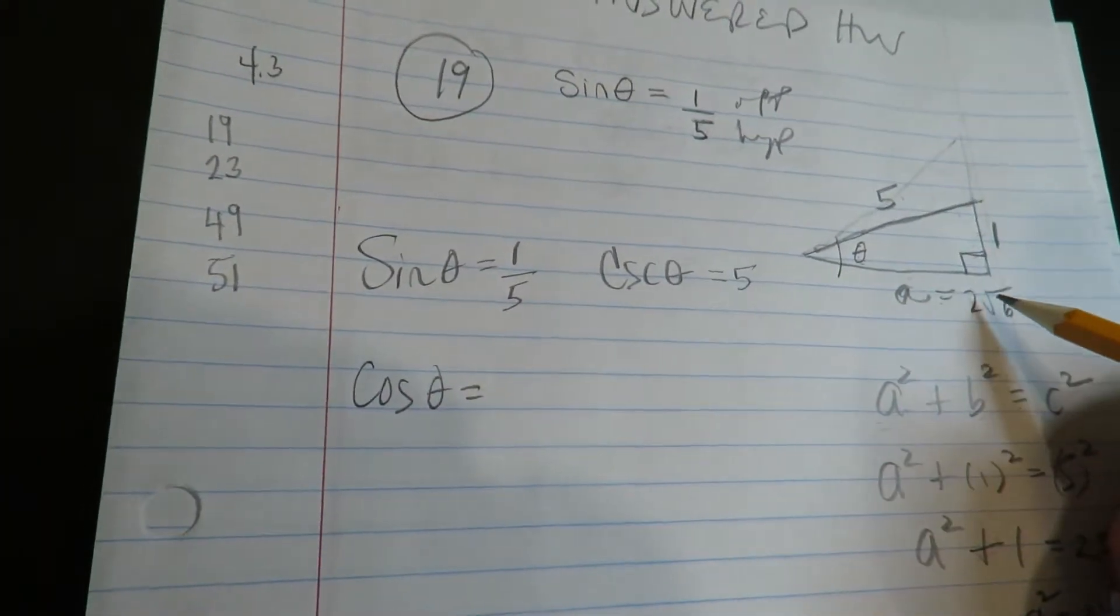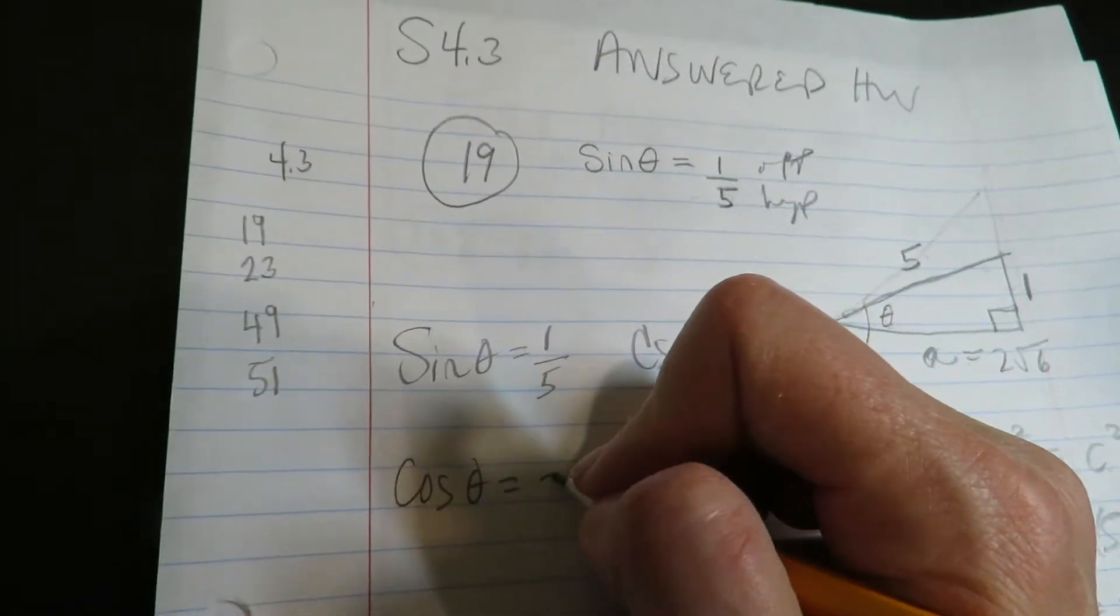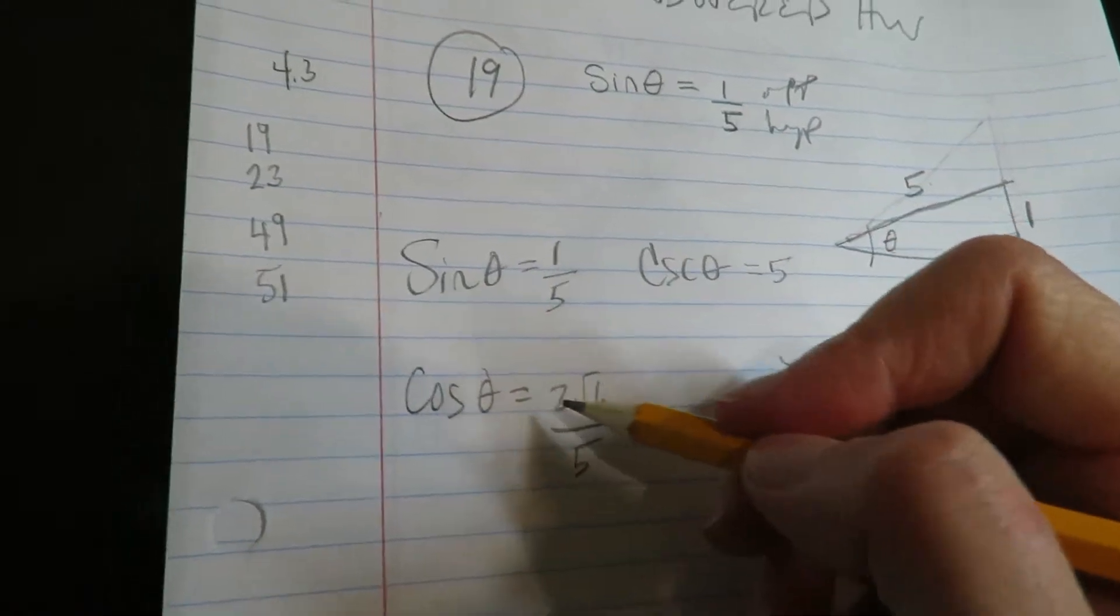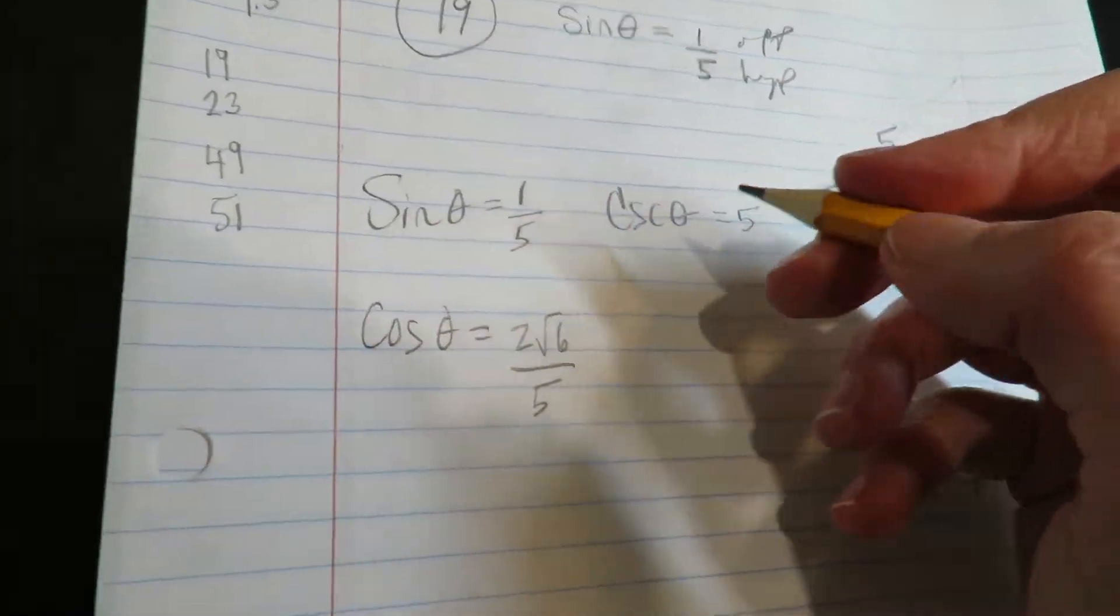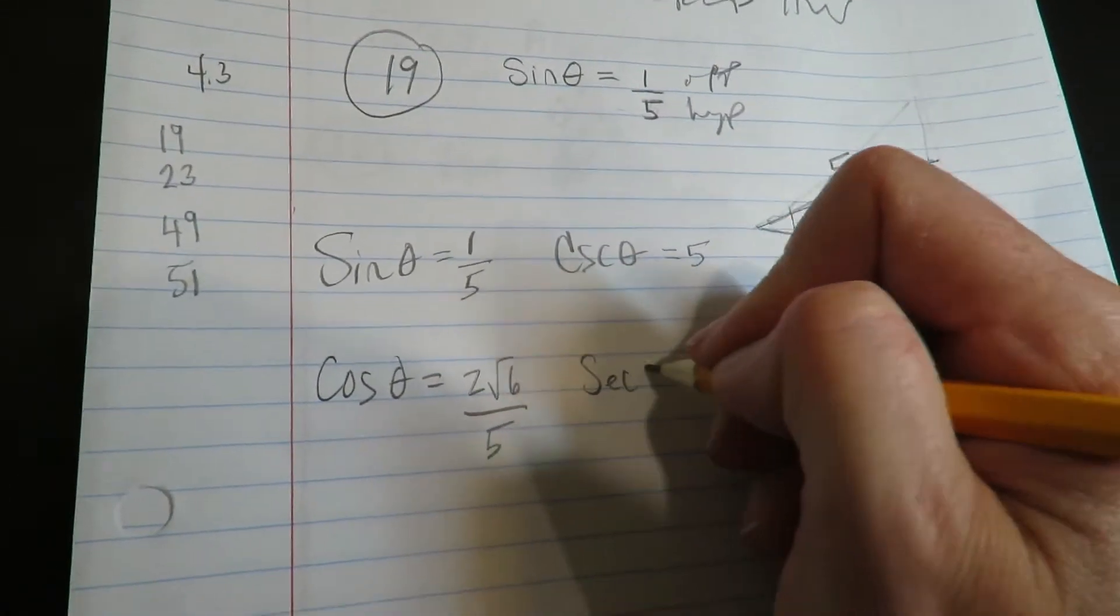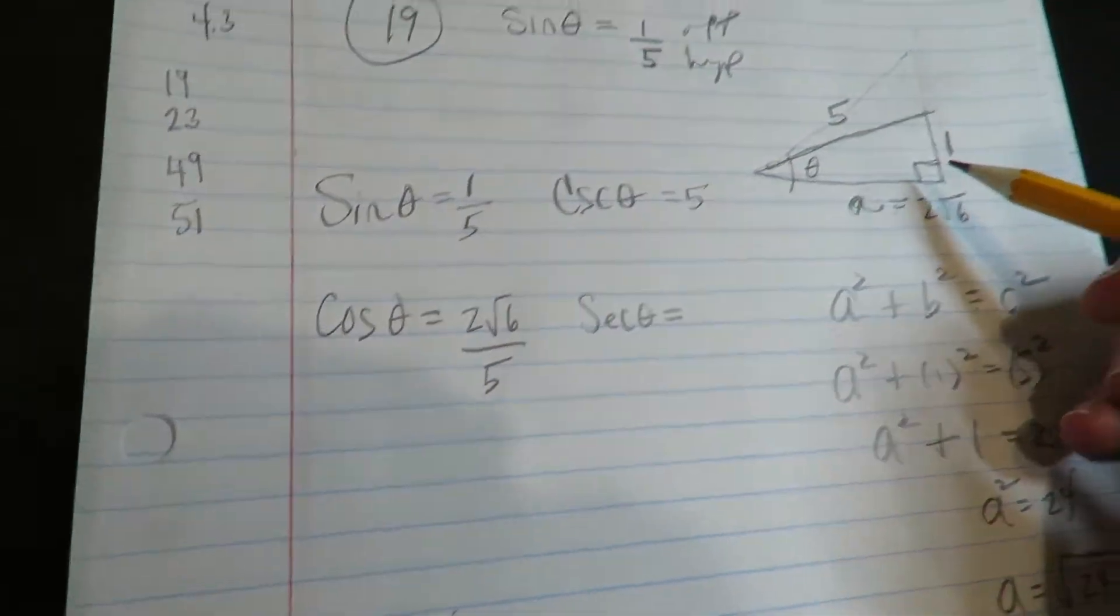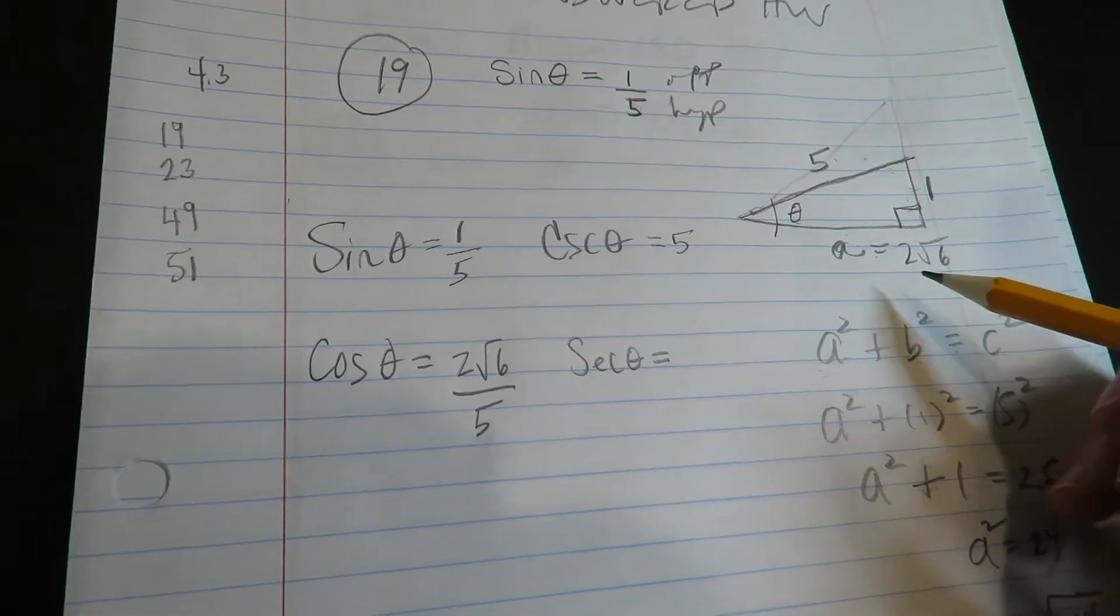Okay, cosine is the adjacent over the hypotenuse. The reciprocal of cosine is secant. The secant is the flip of the cosine, or you could think about it as the hypotenuse over the adjacent.